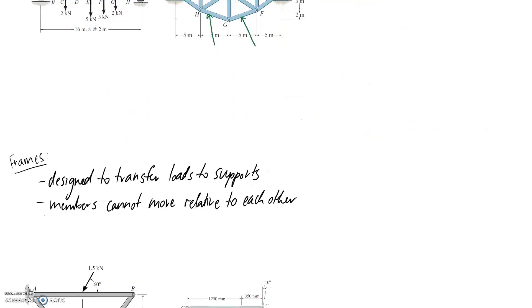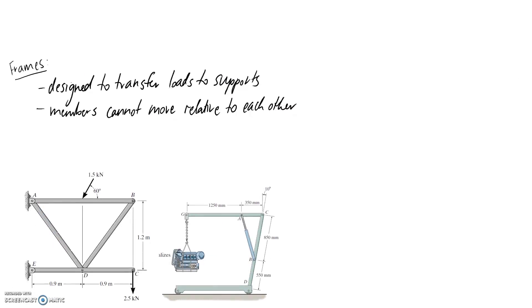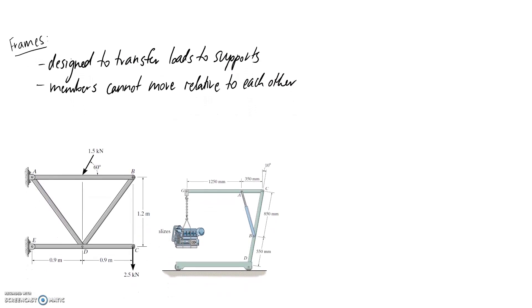So scrolling down now to looking at the difference between frames and machines. So there's two main points about what makes a frame a frame. One of them is that frames are designed to transfer loads to the supports. So you can see here on the first one of the examples, we've got a force applied at the center of one of our members, which means that this one here is going to be a multi-force member and making it a frame.